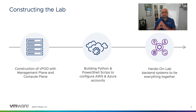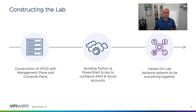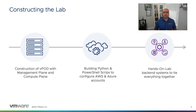Second, we built our compute plane in public cloud — in AWS and also in Azure. Both are identical and we automated the process using Python boto3 APIs for the AWS side and PowerShell for the Azure side. These scripts not only provision the resources needed for the lab in public cloud, but also deprovision and clean up once you're done.